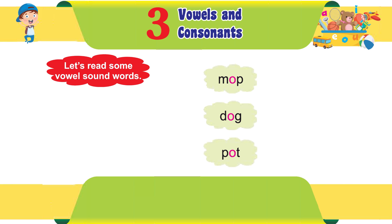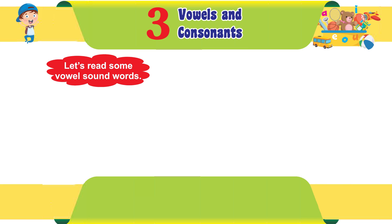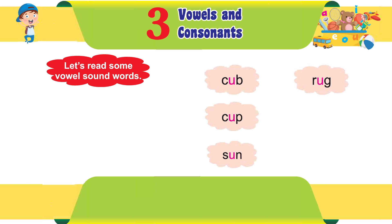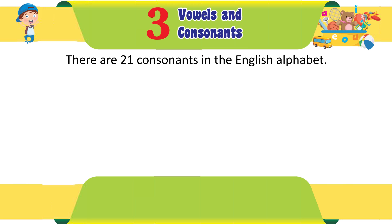Pot, Rob, Mob, Rod, Cub, Cup, Sun, Rug, Bug, Hub. There are twenty-one consonants in the English alphabet.